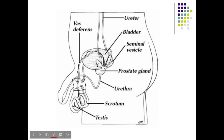The seminal vesicles are our first accessory gland. They produce the bulk of seminal fluid or semen. In semen, we have two things: actual sperm and seminal fluid. Sperm cannot live without seminal fluid.